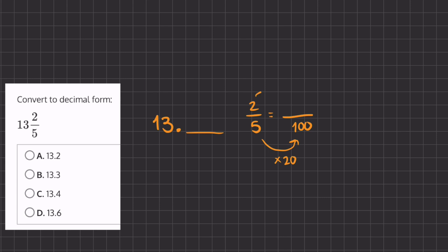If we multiply the denominator by 20, we'll multiply the numerator by 20, and we'll get a numerator of 40—2 times 20.